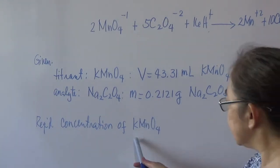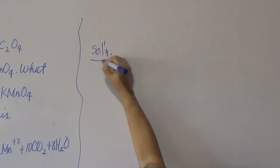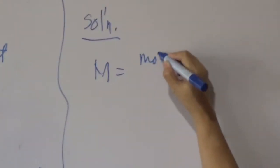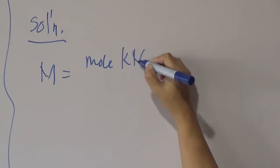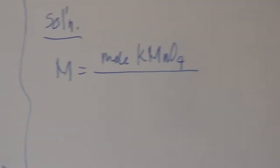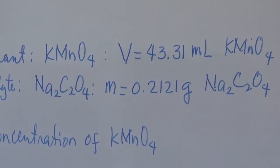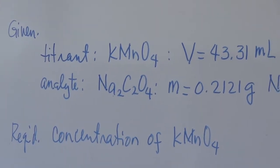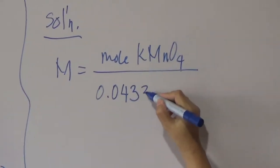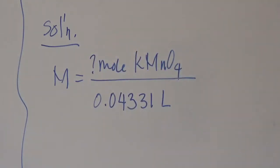The required here is the concentration of permanganate. Usually, if you have concentration and you are given the mass, you would prefer to solve concentration in terms of molarity. Molarity is equal to moles of the solute — in this case potassium permanganate, KMnO₄ — over the volume of permanganate used in the titration to completely react with 0.2121 grams of sodium oxalate. That volume is 43.31 mL, or 0.04331 liters. This will be our working equation, and our target is to determine the number of moles of potassium permanganate.